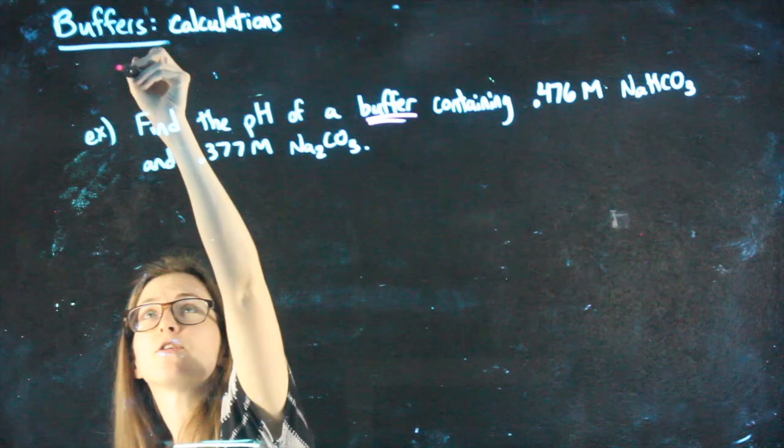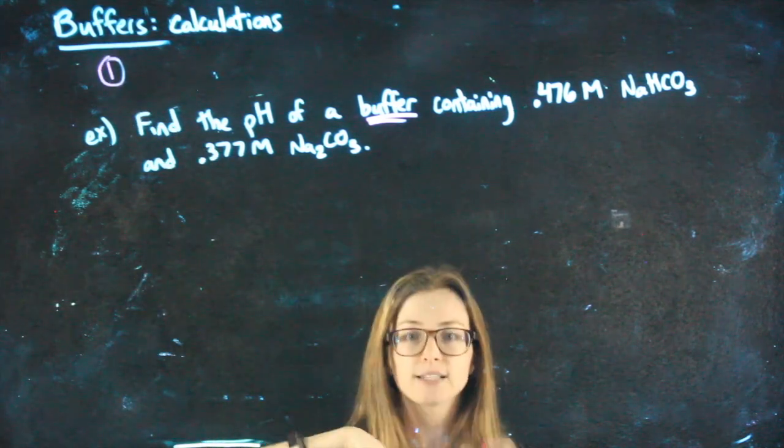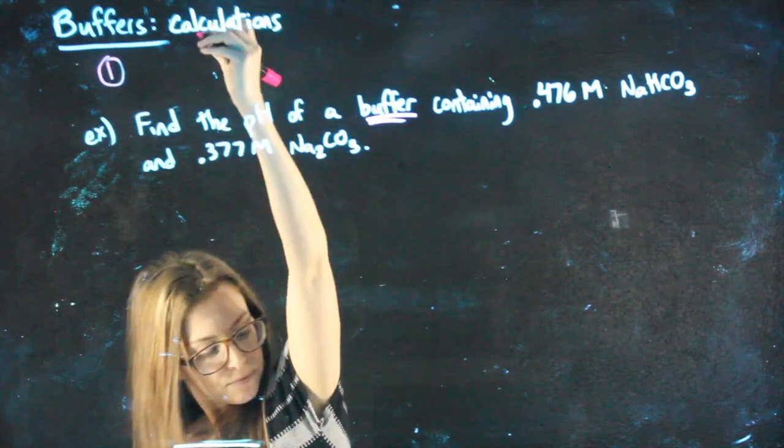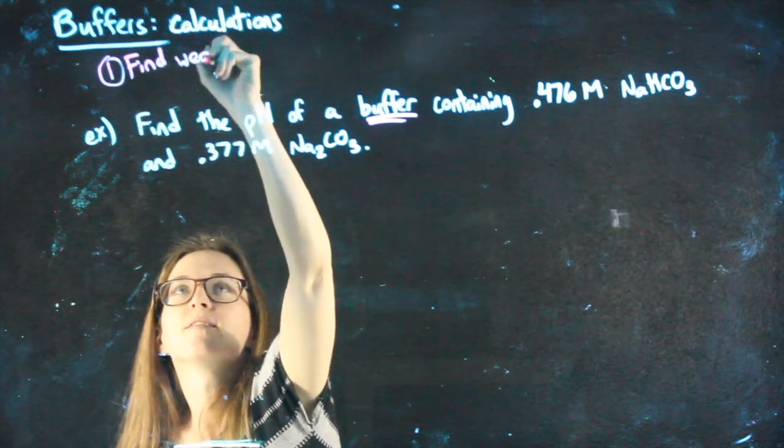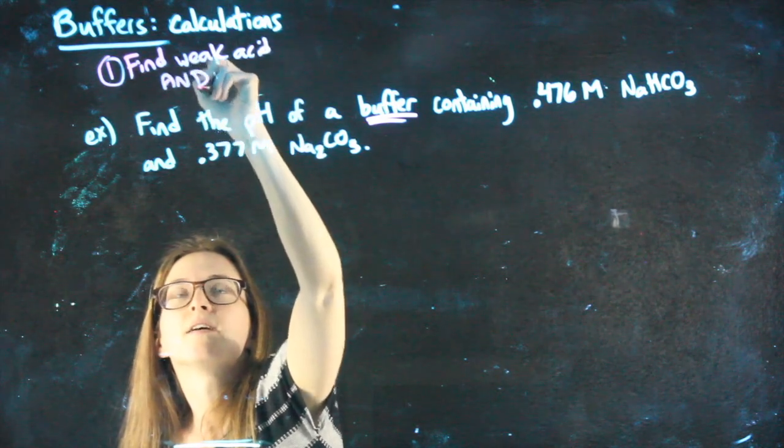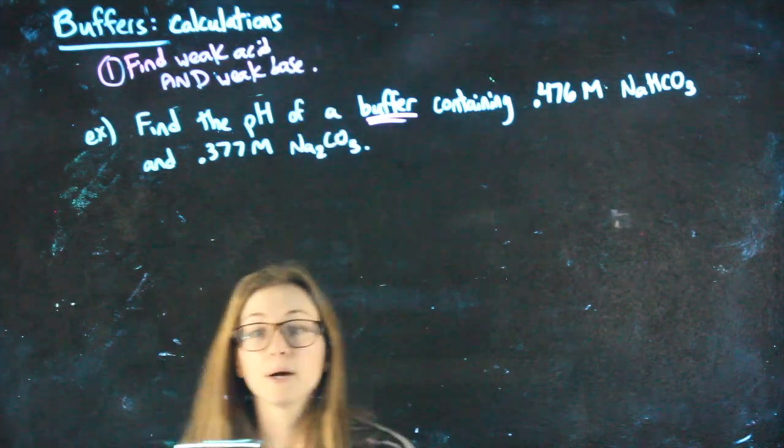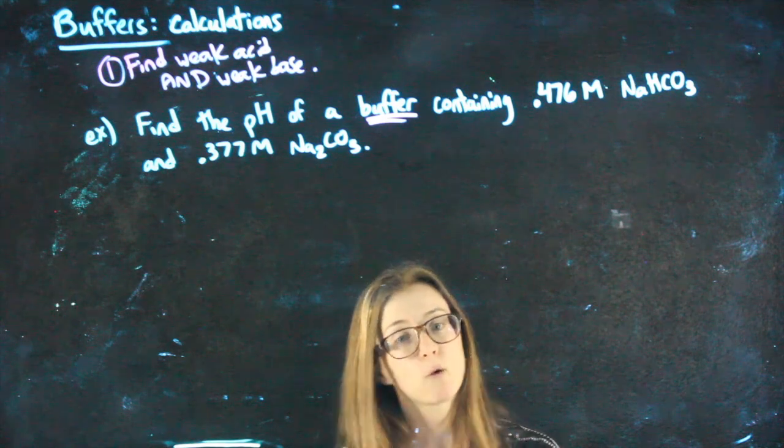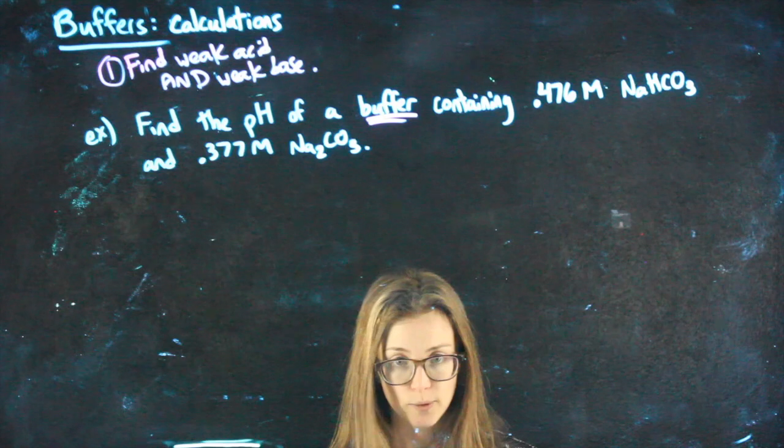Two steps to solving this. I'll write the general steps up here. My first step: we know that a buffer has a conjugate pair. Find or identify the weak acid and the conjugate weak base. It might be that they're given to you straightforward, or one or both of them are hiding within a salt. Either way, we have to find our weak acid and our weak base.